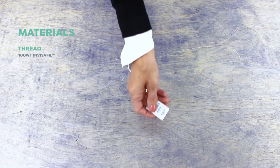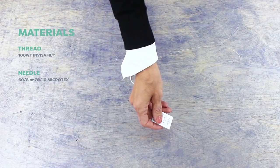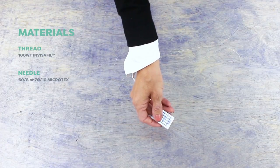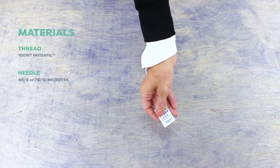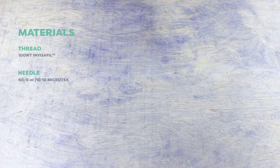Because the thread is so fine, we're also going to choose a needle with a smaller eye. Choose a size 8 or 10 Microtex needle which will work best on light fabrics.